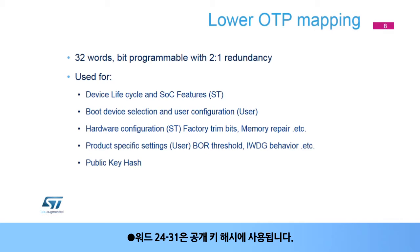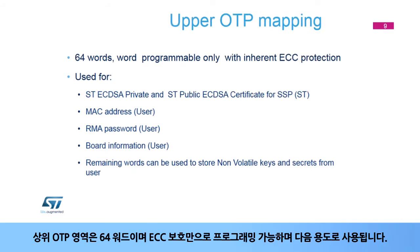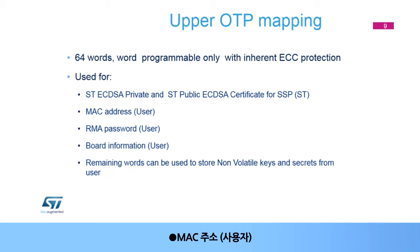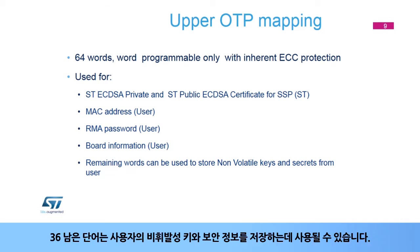Words 24 to 31 are used for public key hash. The upper OTP area is 64 words, programmable only with ECC protection, and used for ST ECDSA private and ST public ECDSA certificate for SSP (ST), MAC address (user), RMA password (user), board information (user), and 36 remaining words that can be used to store non-volatile keys and secrets from the user.